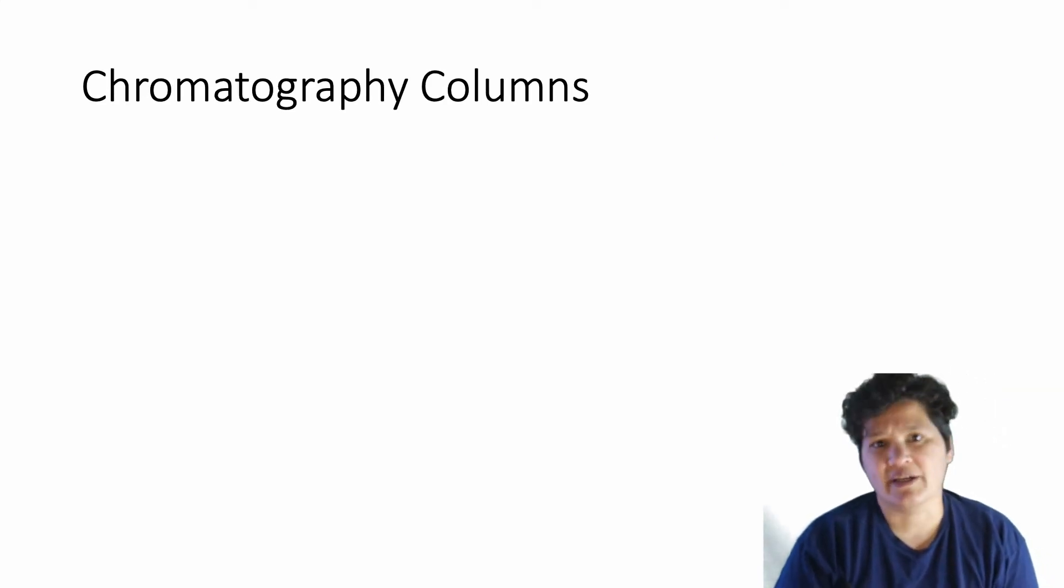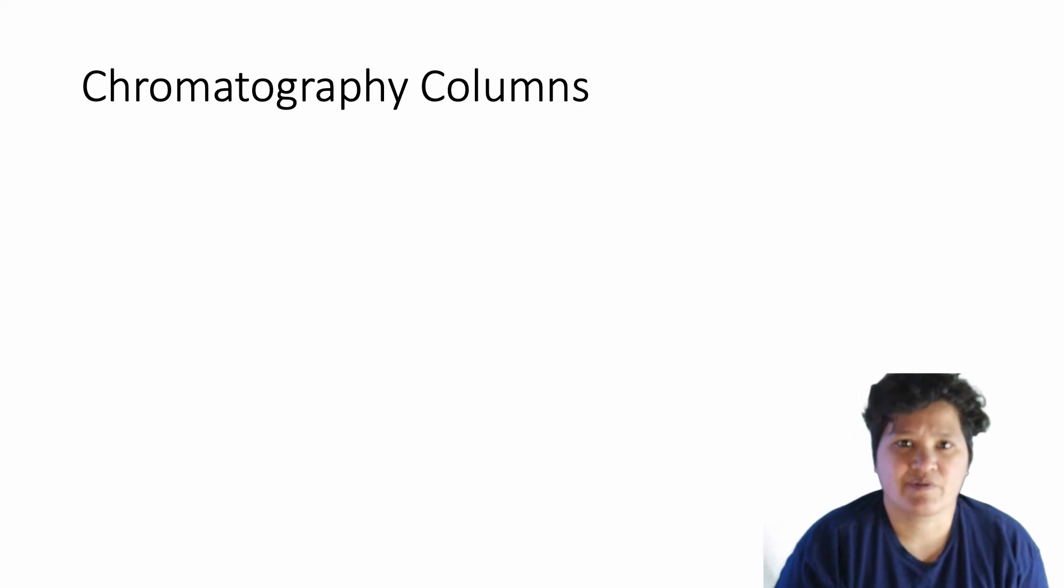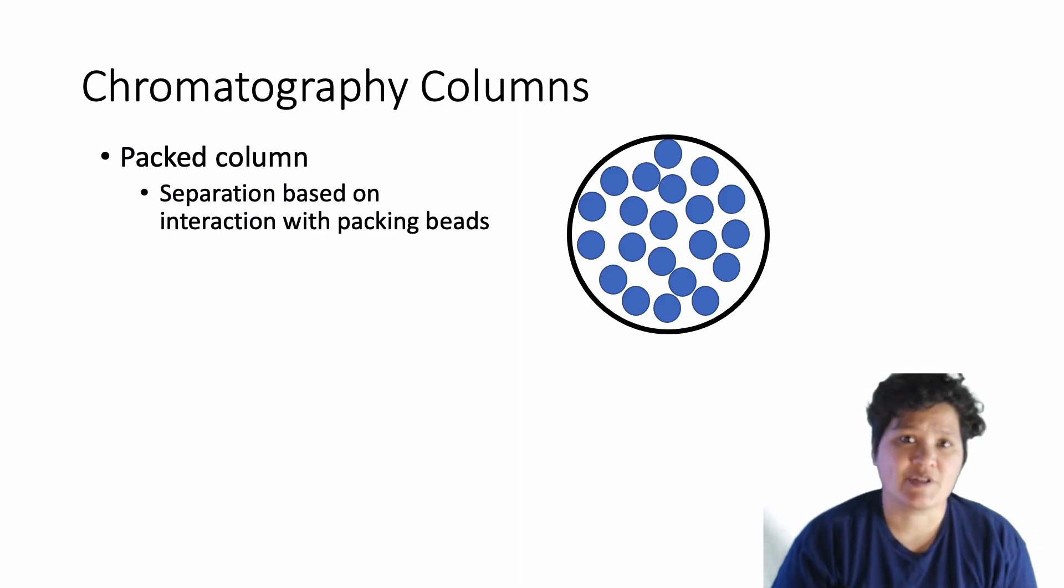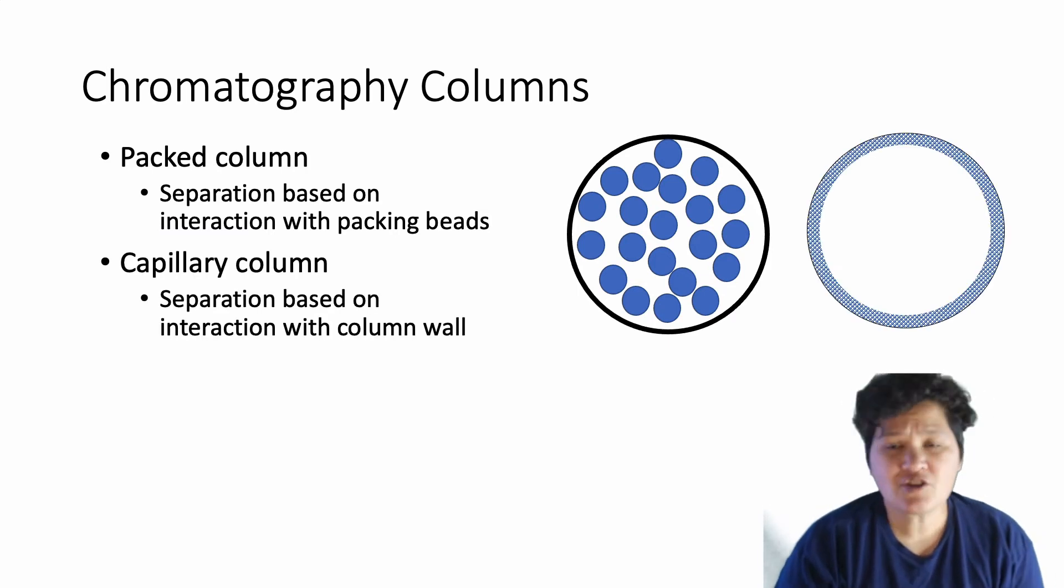Separations happen because of the way that analytes interact differently with the stationary phase. So what does a stationary phase look like? Well, it really depends on the sort of column you're using. For some types, a packed column is used. This is a column filled with some sort of beads with a very particular surface. By contrast, a capillary column does not have packing, but instead has some sort of coating on the column wall. This may be a porous coating, so your analyte may go in and out of the porous coating.